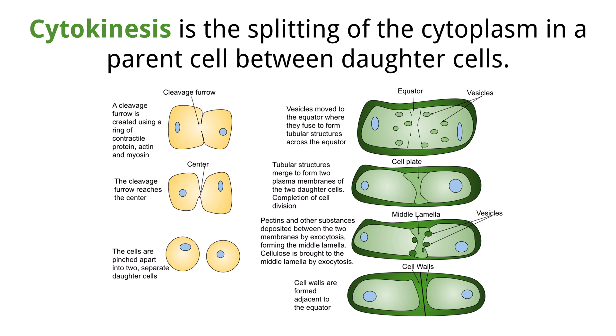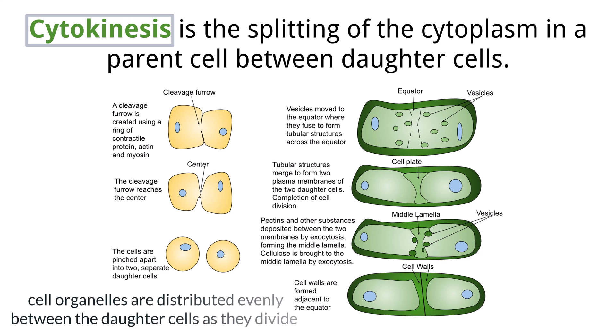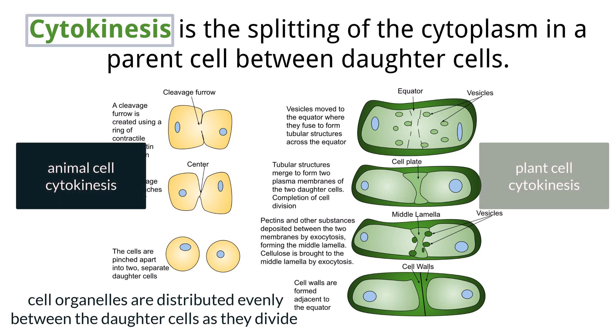When a cell gets to a certain size, it needs to divide into two. This is done by cytokinesis, which is division of the cytoplasm, and follows the final stage of nuclear division, mitosis. During division, the organelles of the cell are distributed evenly between the cells. The process is different in animal and plant cells, due to the rigid cell wall of plants.